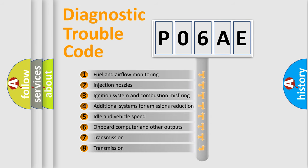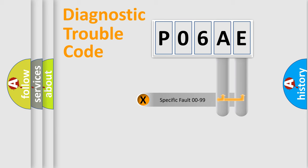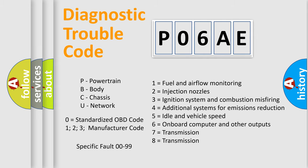The distribution shown is valid only for the standardized DTC code. Only the last two characters define the specific fault of the group. Let's not forget that such a division is valid only if the second character code is expressed by the number zero.